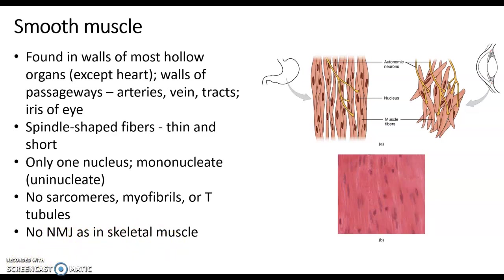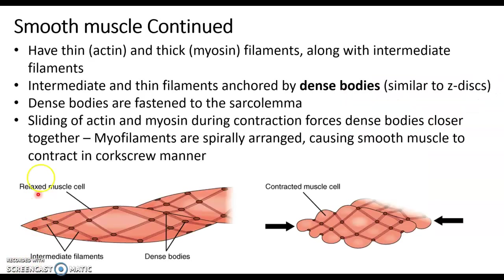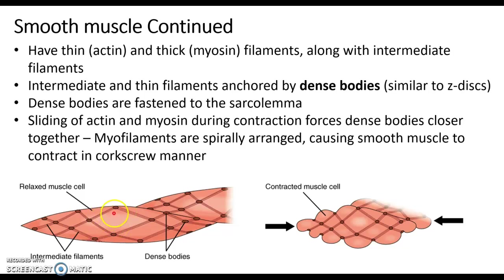So let's see how smooth muscles work to contract. There are actin and myosin — thin and thick filaments — in smooth muscles, but they also have another type of filament: intermediate filaments. Intermediate filaments are joined at nodes called dense bodies. When actin and myosin slide against each other, they pull on the intermediate filaments, which causes the dense bodies to move closer together and then farther apart again. You can see them contracting in this corkscrew manner. Dense bodies would be equivalent to the Z-discs in a sarcomere when talking about skeletal muscle.